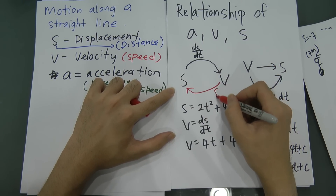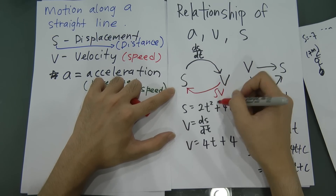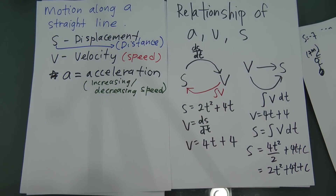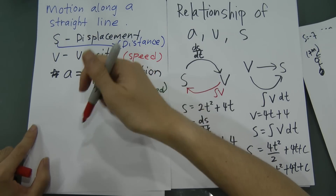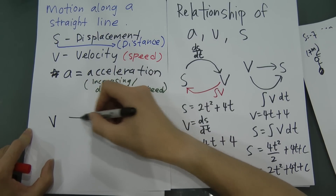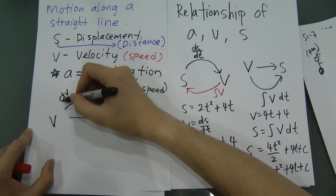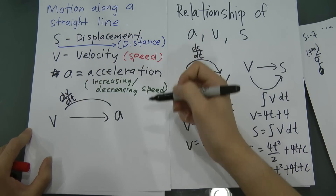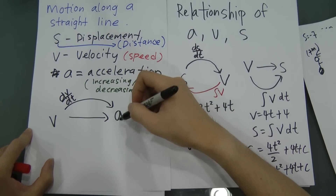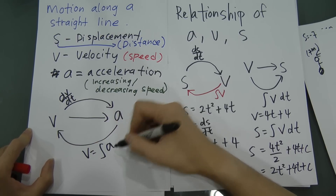To summarize the relationships: differentiate s to get v; integrate v to get s. Similarly, differentiate v (dv/dt) to get acceleration a; integrate a dt to get back to velocity v.